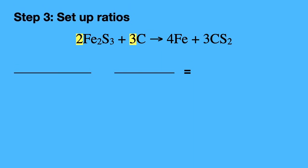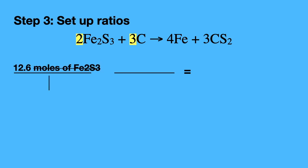Step 3. Set up molar ratios. Start with what's given. 12.6 moles of Fe2S3 over 1. We normally don't put a 1 there but for the purpose of this video I will place it. Times 3 moles of carbon divided by 2 moles of Fe2S3.